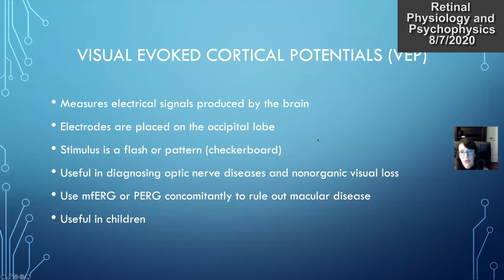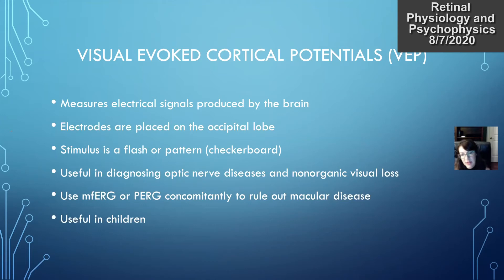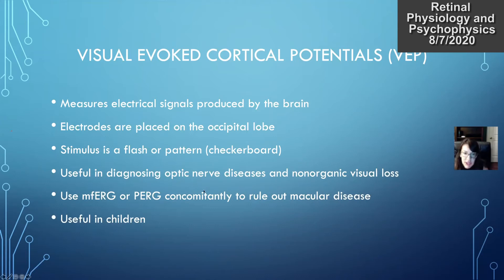Visual evoked cortical potentials look at signals produced by the brain, with electrodes placed on the occipital lobe. The stimulus is a flash or a checkerboard. It's very good in diagnosing optic nerve diseases and fictitious visual loss — if a patient complains of visual loss that you can't evaluate in the office, a VEP will show if there's any function in the optic nerve. It's also good in pre-verbal children to determine if there's any visual function, and you can combine it with multifocal or pattern ERG to evaluate macular function separately from optic nerve function.